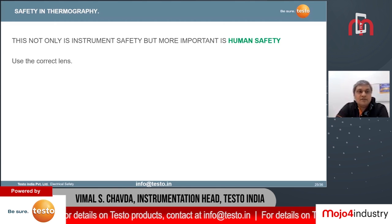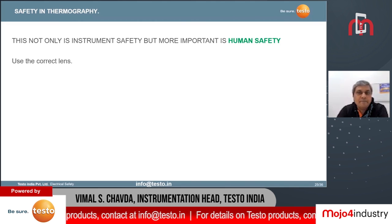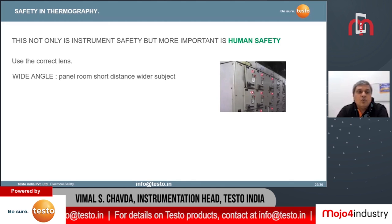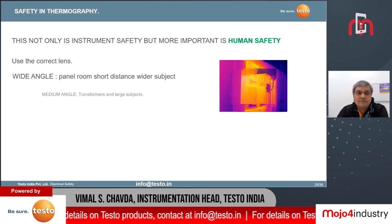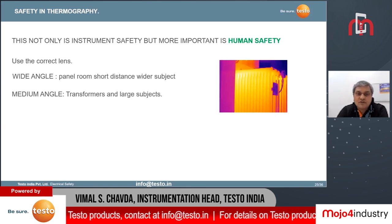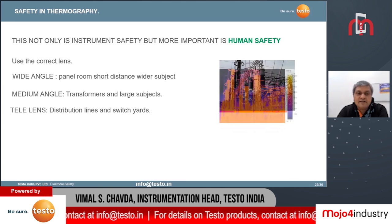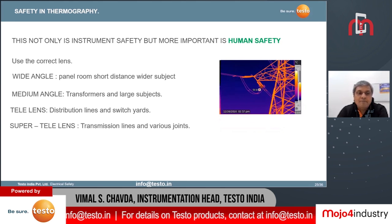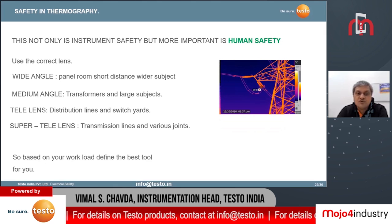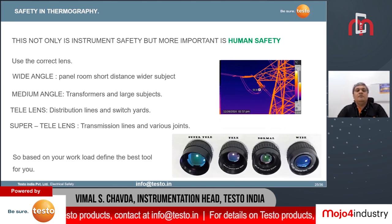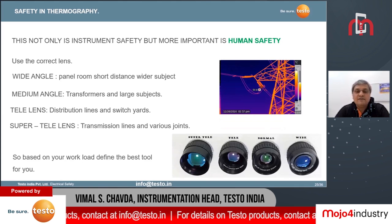Choosing the right tool from a safety perspective means selecting the right lens. Use a wide-angle lens for panel rooms at short distances with wide subjects, a medium-angle lens for transformers and large subjects, a tele lens for distribution lines and switch yards, and a super-tele lens for transmission lines and various joints. Based on your workload, define the best tools for your thermography work.